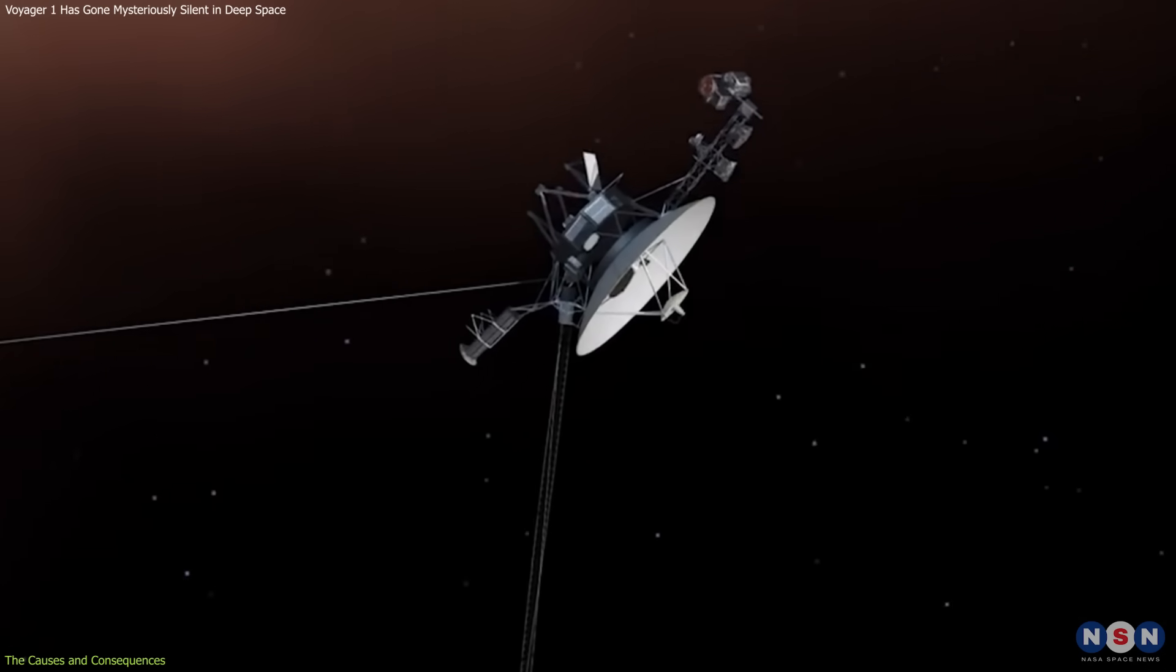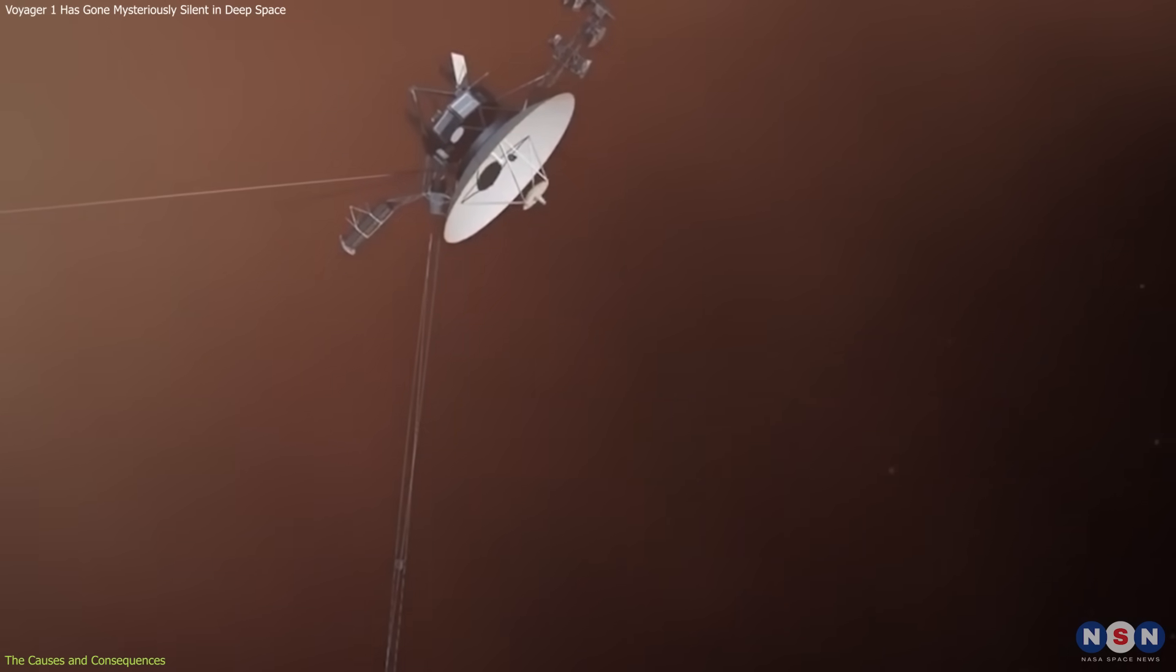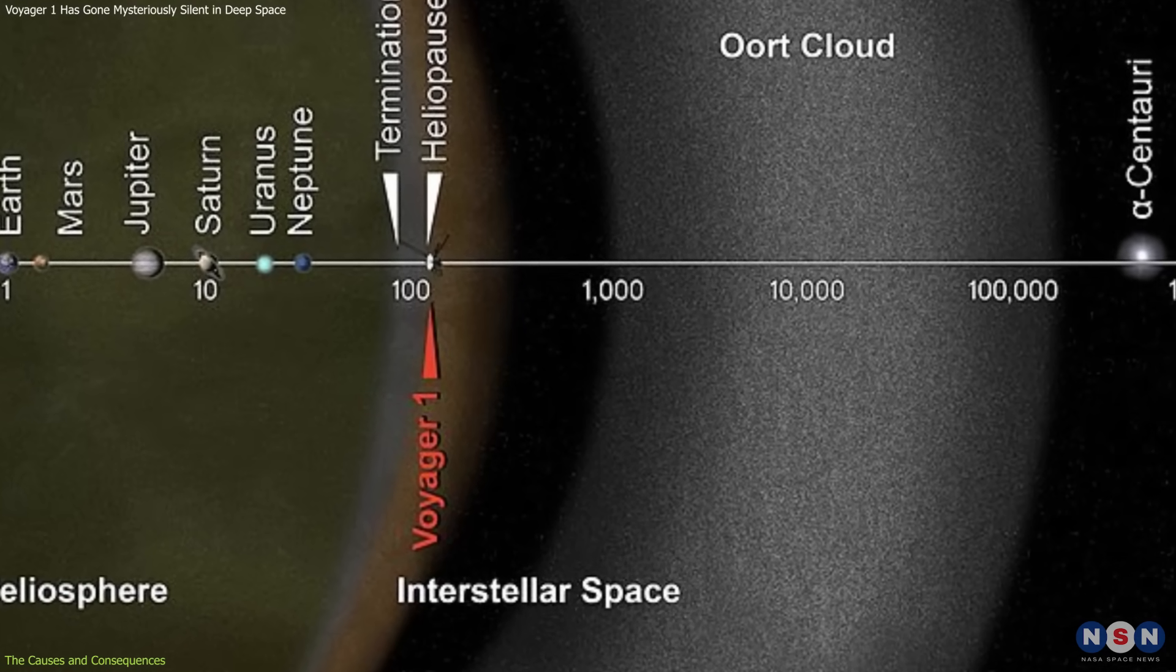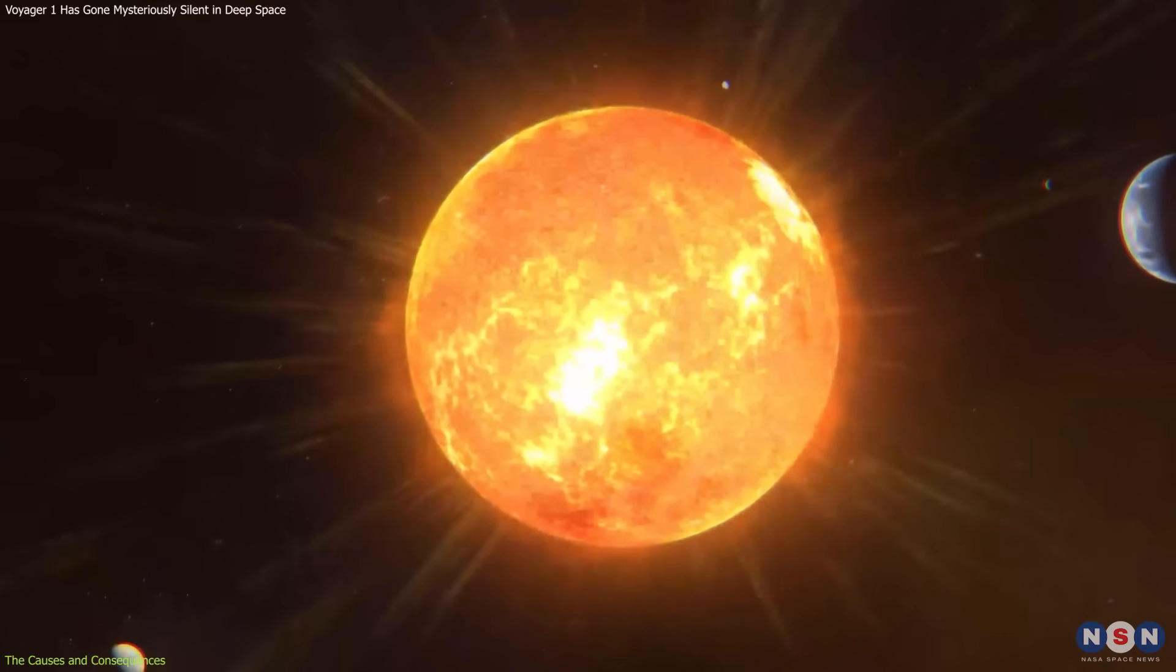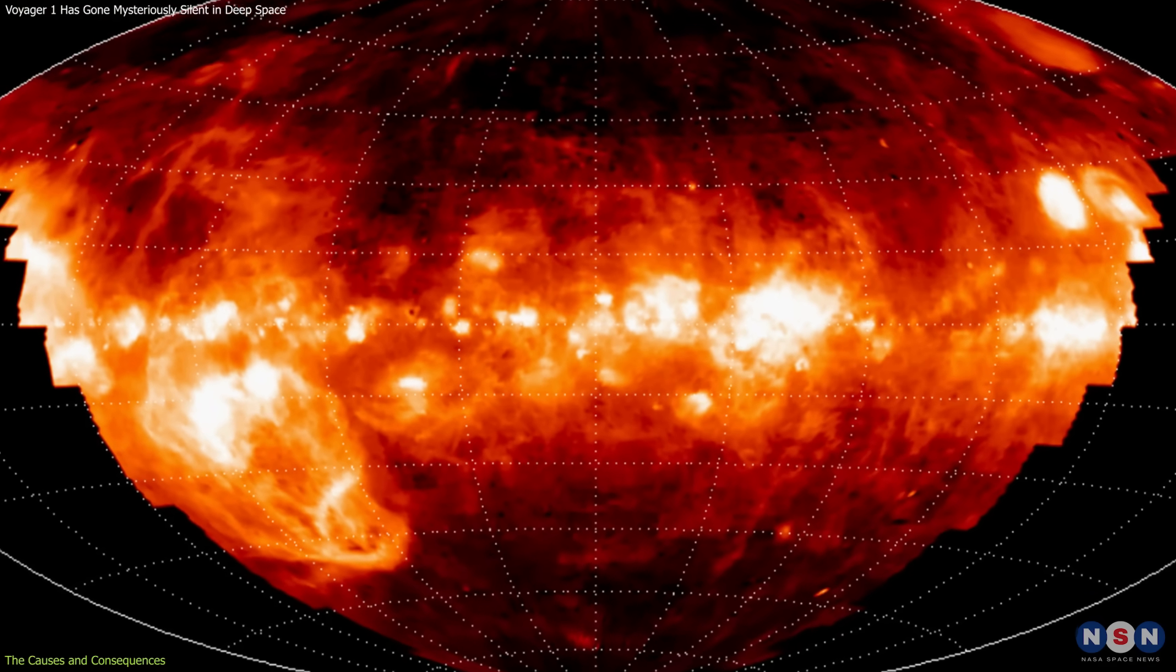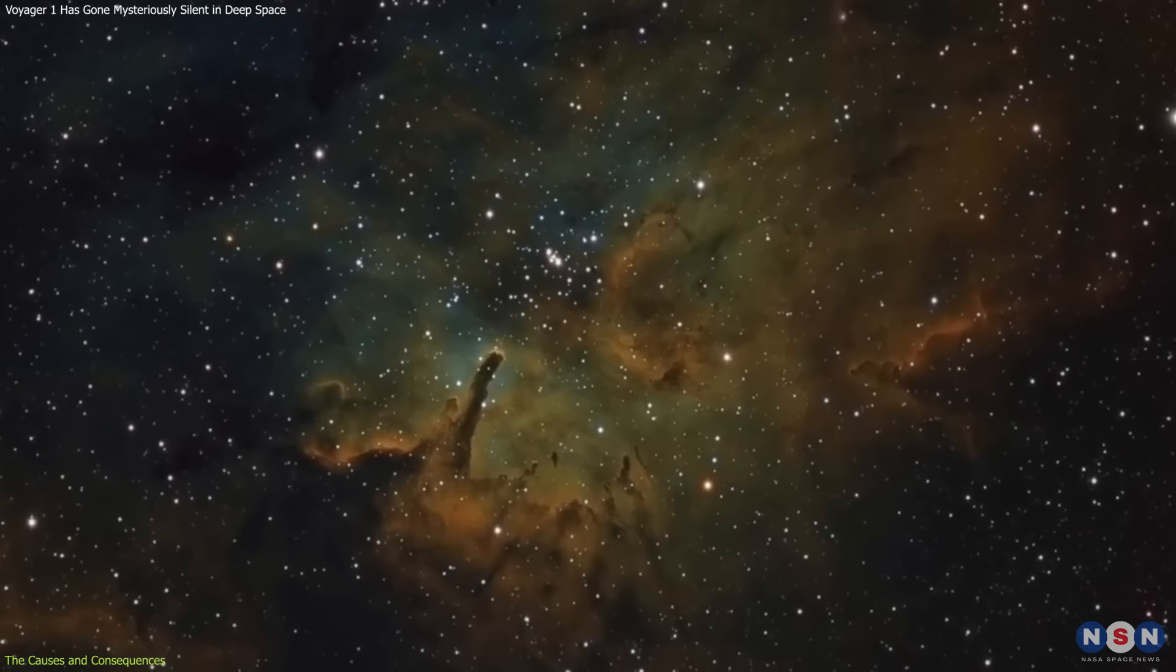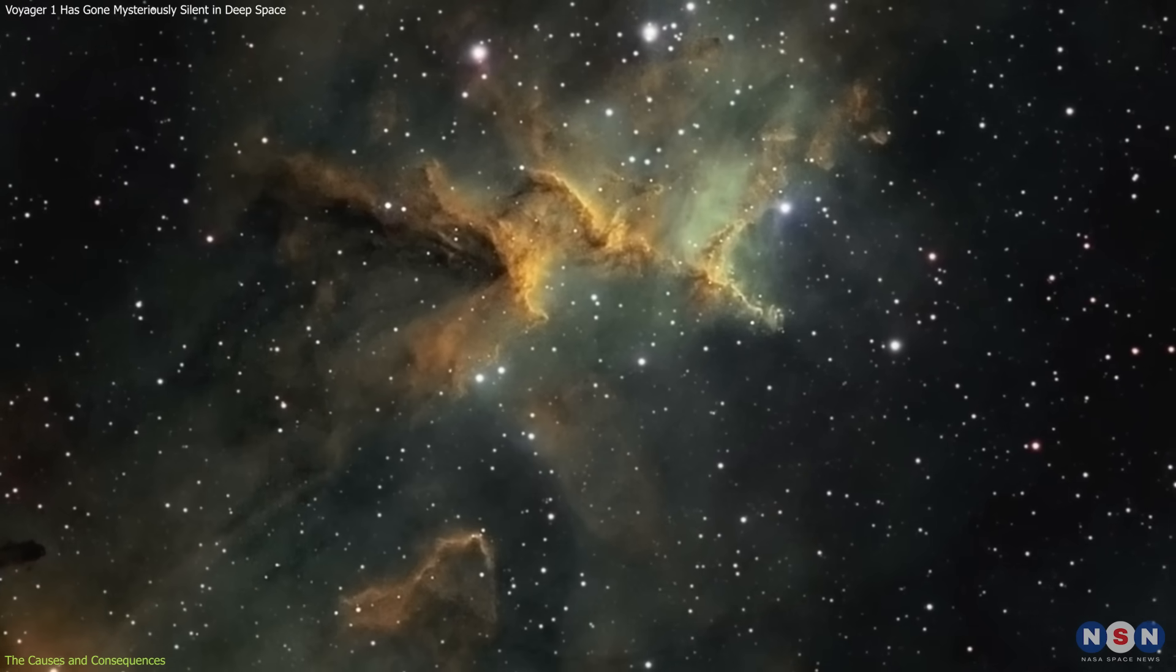Secondly, the environment. Voyager 1 is in a very harsh and unpredictable environment: interstellar space. Interstellar space is the space between the stars, where the solar wind, the stream of charged particles from the sun, gives way to the interstellar medium, the matter and radiation that fills the galaxy. This is very cold, very dark, and very empty, but it is not completely void. It contains some atoms, dust, cosmic rays, and magnetic fields.